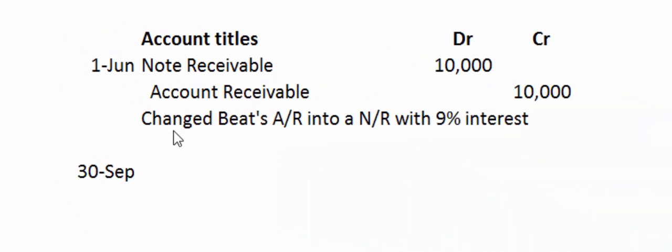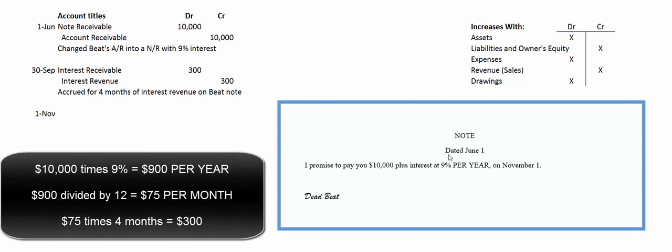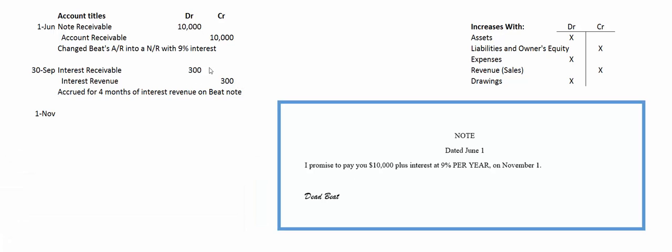Pause and see if you can figure out how much four months worth of interest is on this $10,000, 9% note. The answer is $300. 9% of $10,000 is $900 per year, but we've only earned four months worth. I like to take that year's interest — $900 — divided by 12, which gives one month's worth: $75. So $75 every month, and four months times $75 equals $300 worth of interest revenue. We debit interest receivable for $300 — interest receivable is an asset, assets increase with debits.